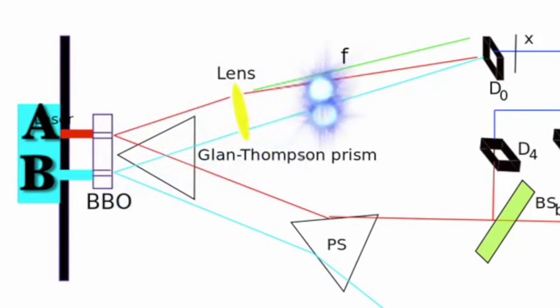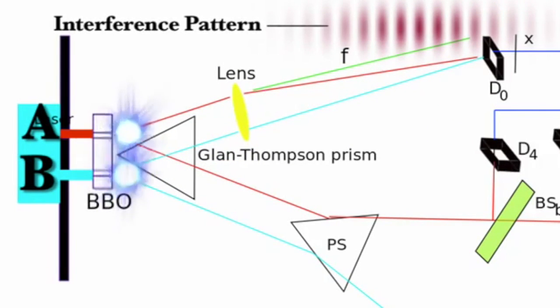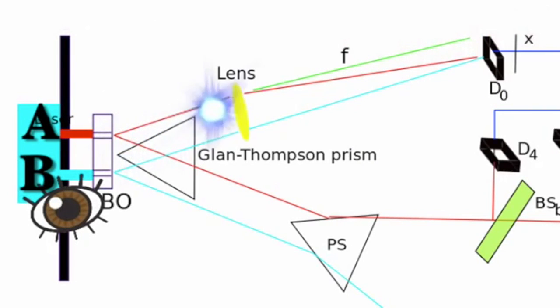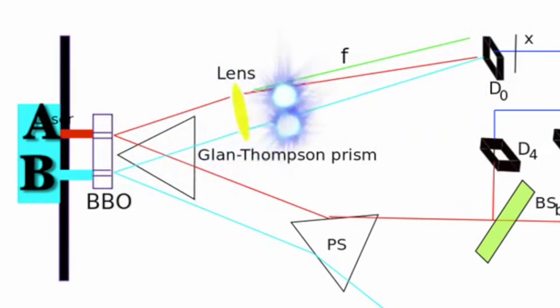Now if the photons only hit D zero, we don't know the path information, since when the photon arrives, it could have either come from path A or path B. So because we don't know the path information, it should produce an interference pattern. If we could place a measuring device at the slit, we would know the path information. But with just a result from D zero, we don't know the path information.